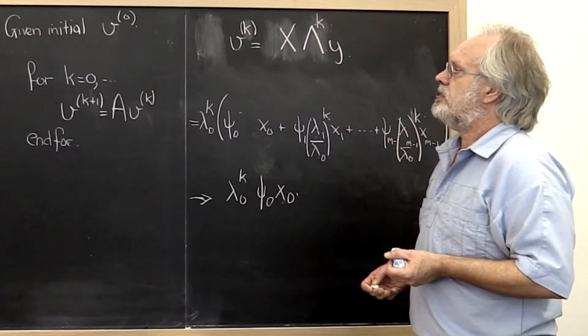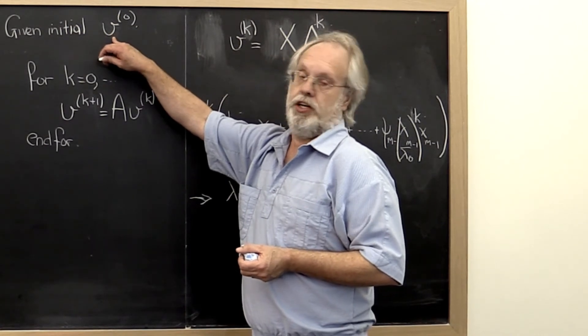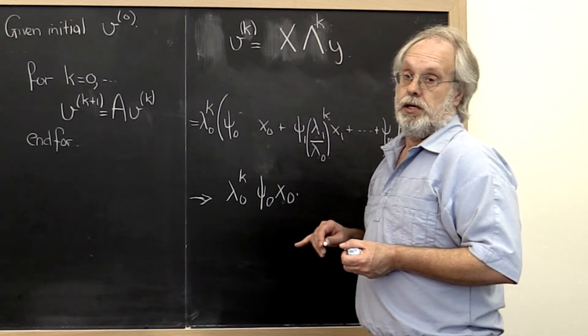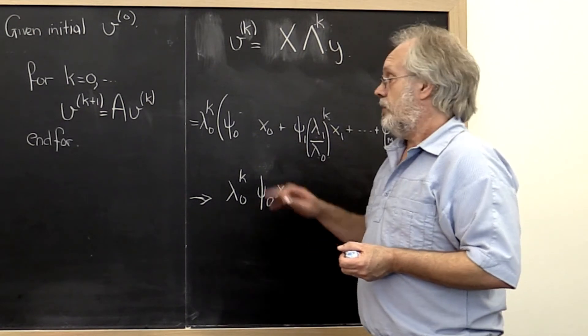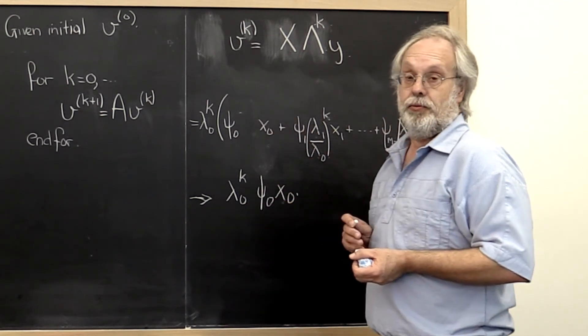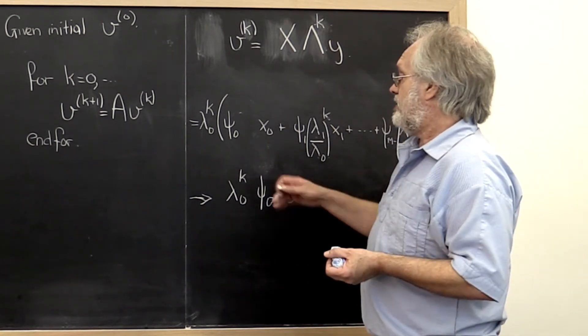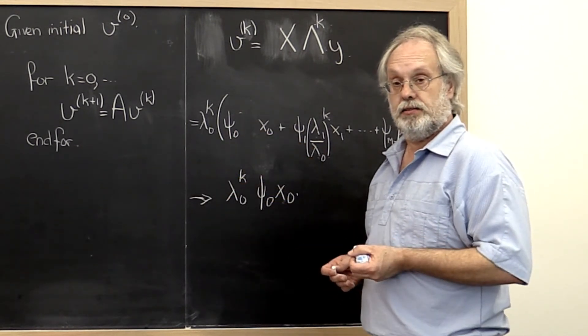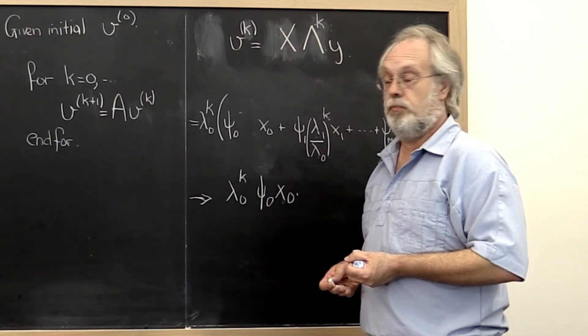Now there are a couple of caveats. One is, if we were extremely unlucky and our initial guess had no component in the direction of x0, then we may not end up amplifying in that direction. And it may also be that this coefficient is very, very small and that therefore it takes a very long time to get there for the rest of them to become relatively speaking small.